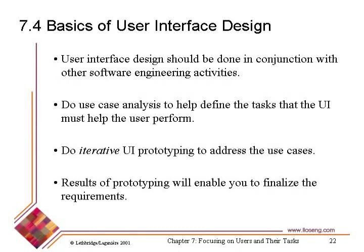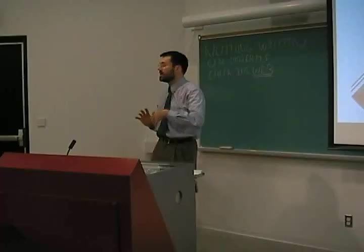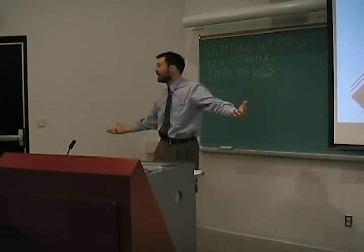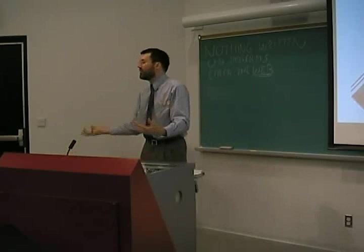You come up with a prototype, work with users, users tell you what's wrong, or you discover what's wrong by observing users make mistakes, you fix it, go back again, show users problems again, discover more problems, go back again. That's one of the reasons why you don't develop the entire system — because you might discover when you present the user interface that users can't use it. You want to do user interface design on the basis of prototypes that you're prepared to throw away. Sometimes you make two or three different prototypes with different ideas for a UI, test them all with different user groups, and pick the one users like best.